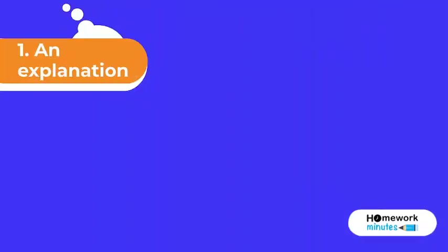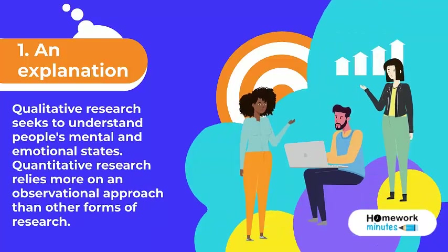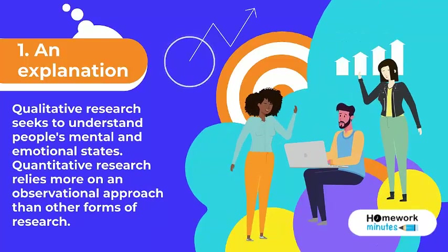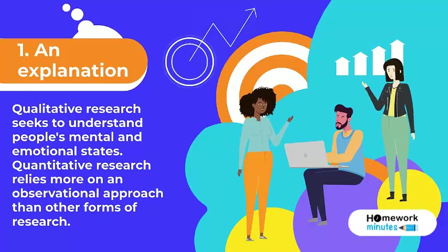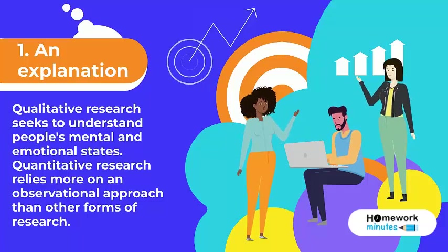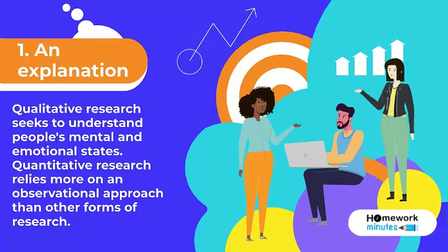Explanation: Qualitative research seeks to understand people's mental and emotional states. Quantitative research relies more on an observational approach than other forms of research.